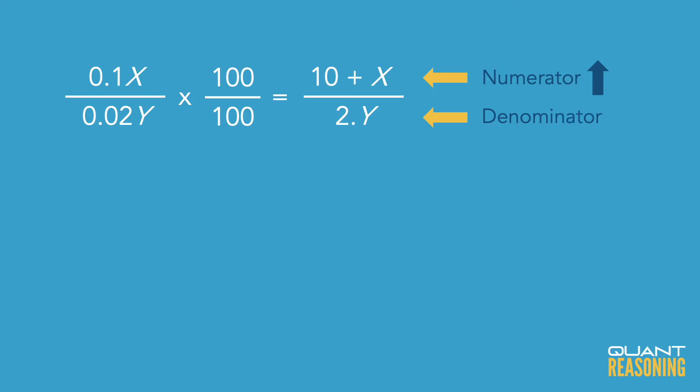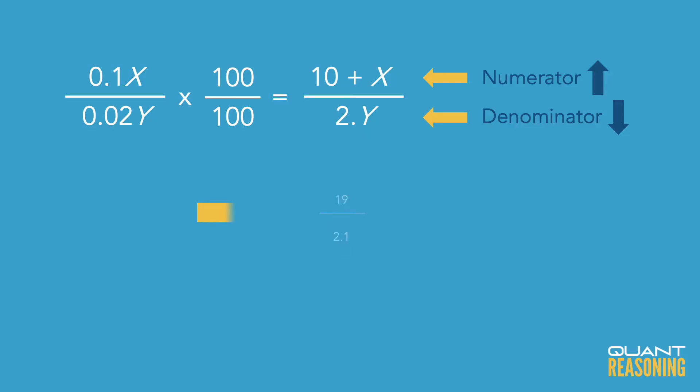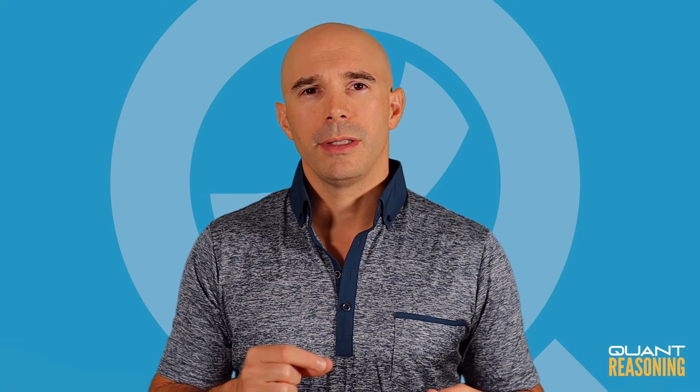So in this case, we'd consider the numerator as 19 and the denominator as 2.1. So 19 divided by 2.1 — I know that 19 divided by 2 is 9.5, but we're dividing by 2.1, so the answer would be a little bit less than 9.5. That's closer to 9 than it is to 10.